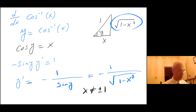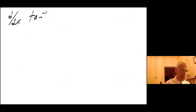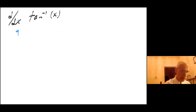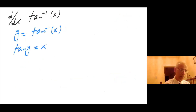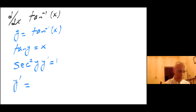With the understanding that x cannot equal plus or minus 1, because we cannot have a 0 in the denominator. Now let's do the tangent inverse. We want to show the derivative of tangent inverse of x. We say that y equals tangent inverse of x, which means tangent of y equals x. Taking the derivative, I have secant squared of y times y prime equals 1, so y prime equals 1 over secant squared of y.